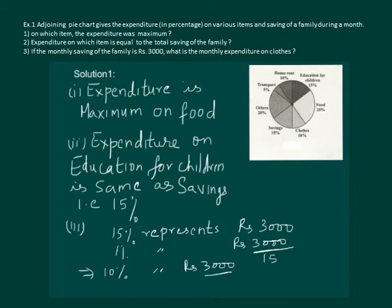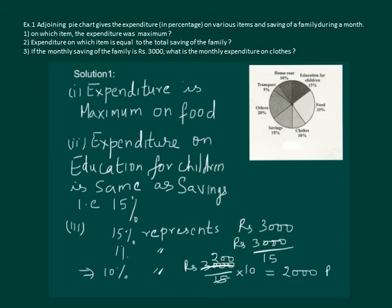This implies that 10% will represent Rs. 3000 divided by 15, multiplied by 10, which is equal to Rs. 2000. That means if the monthly saving of the family is Rs. 3000, then the monthly expenditure on clothes is Rs. 2000.